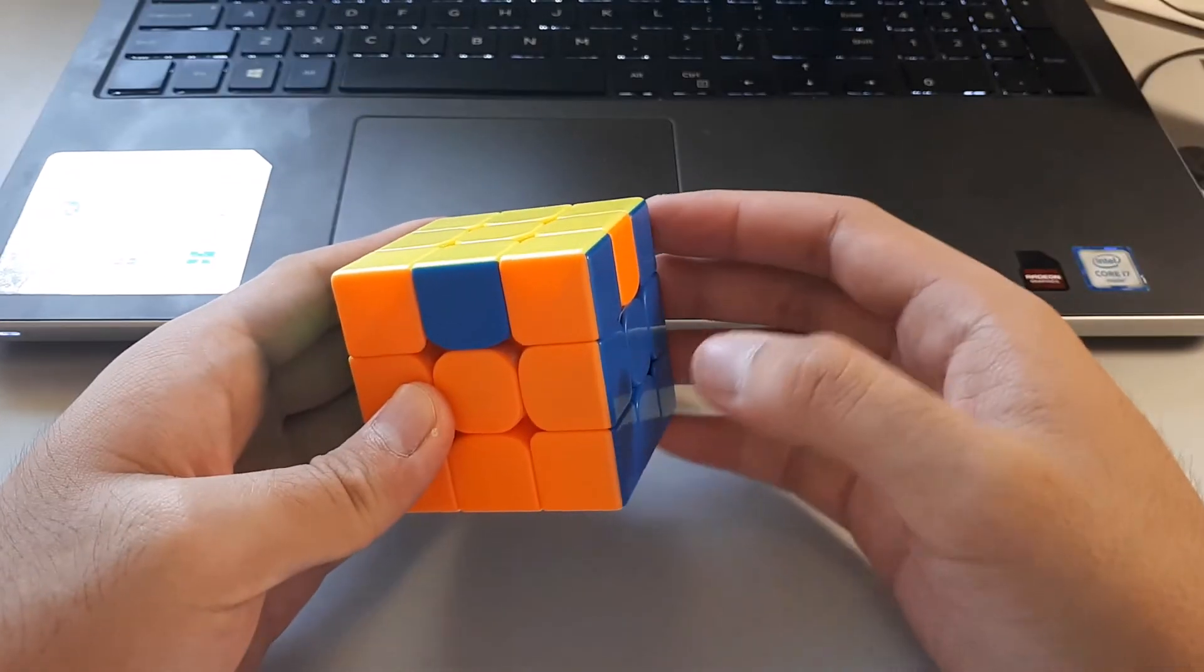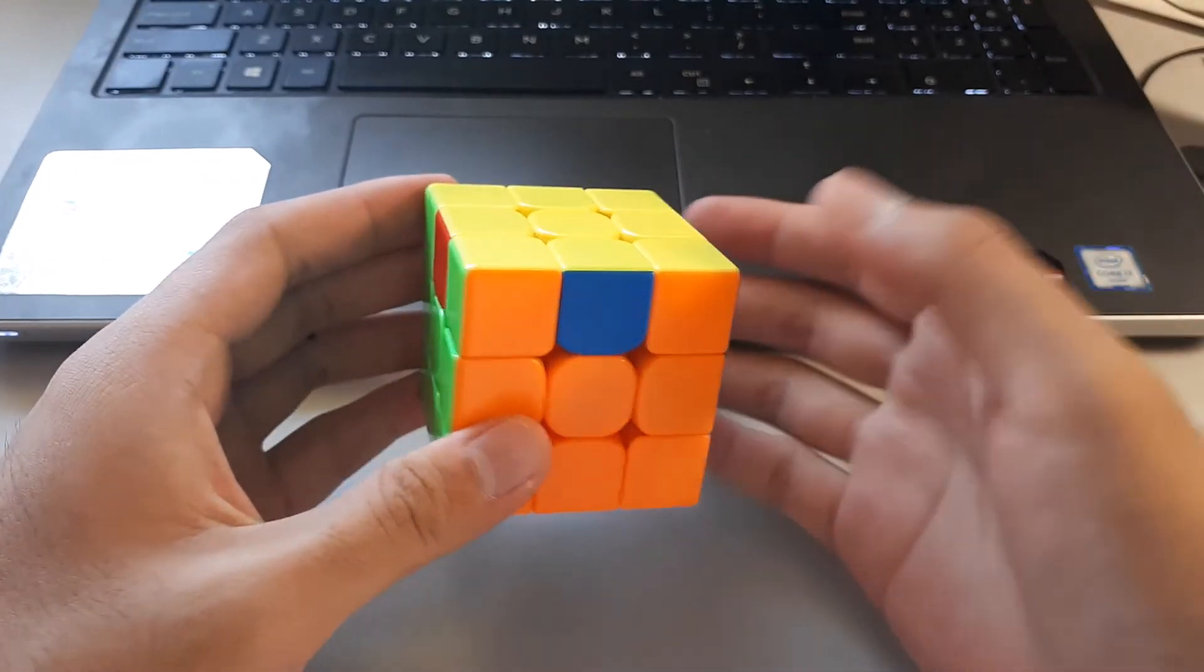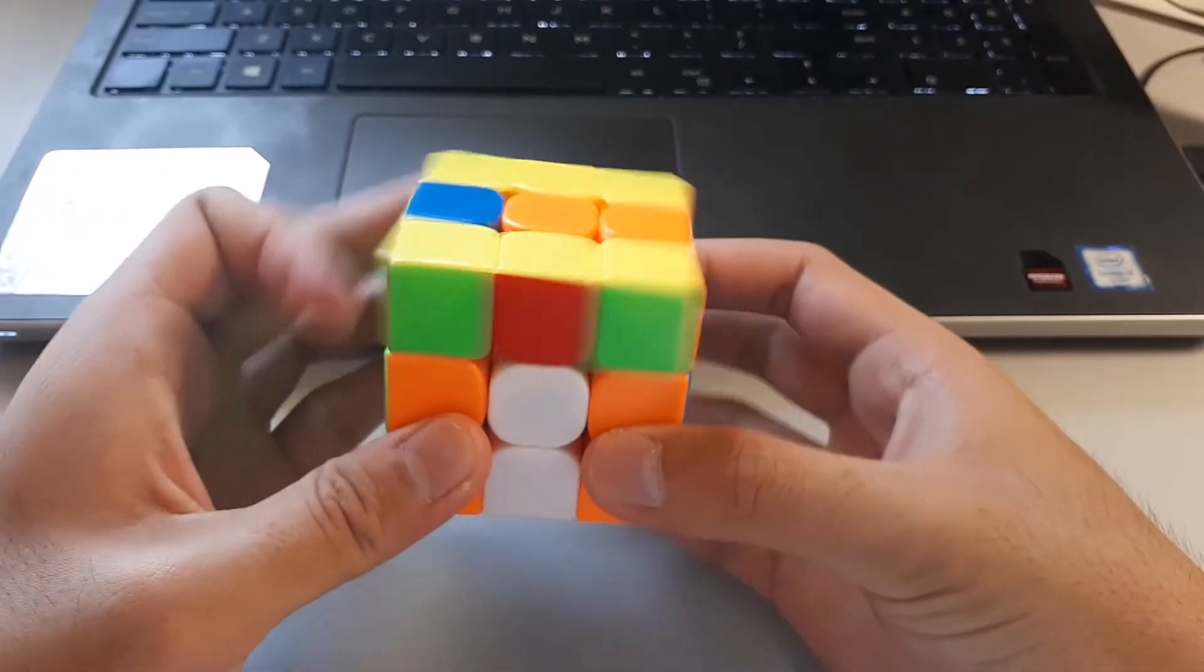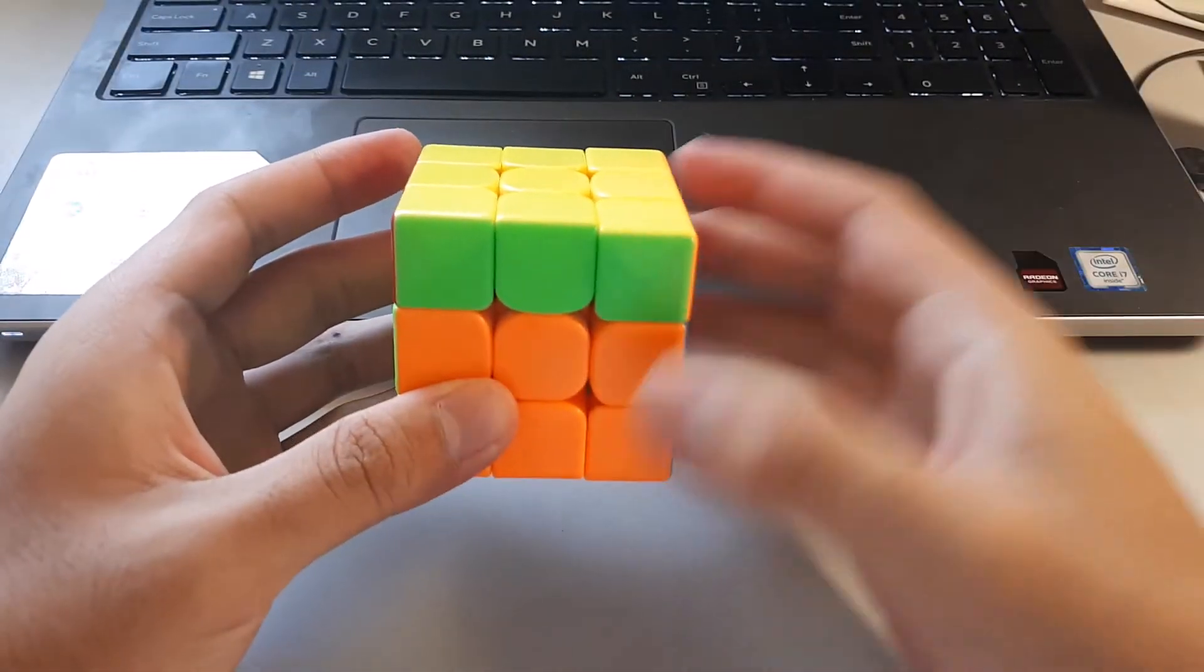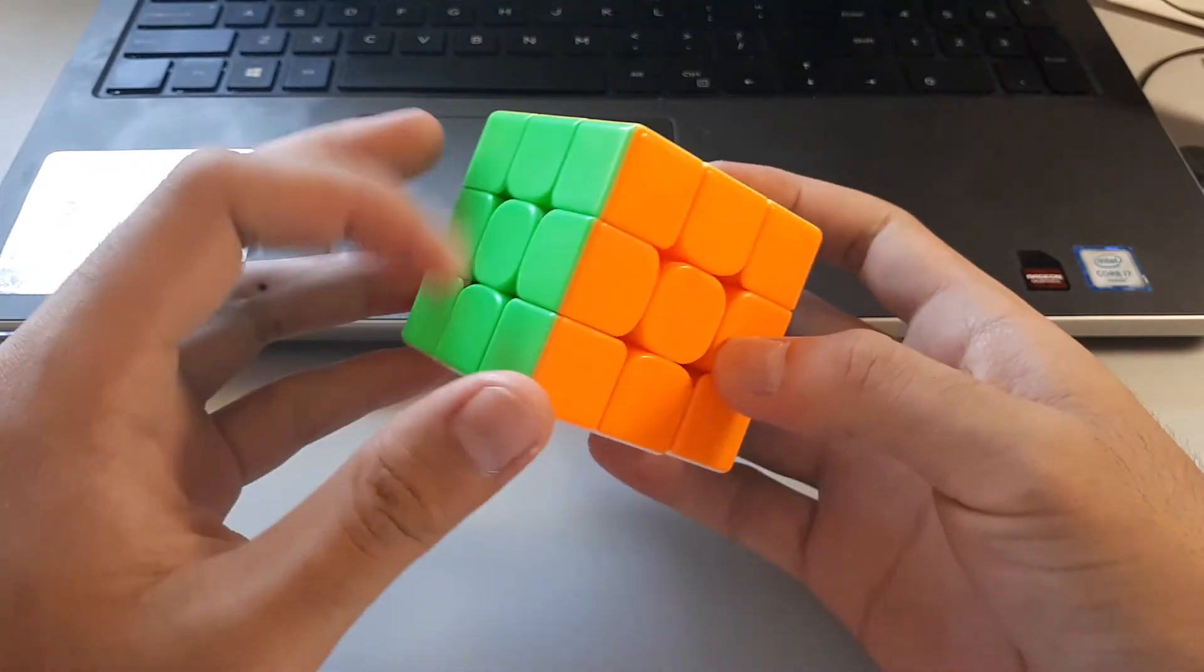With that in mind, here's the algorithm with the AUF. So green ends up at the front, and I add a U move to solve the cube.